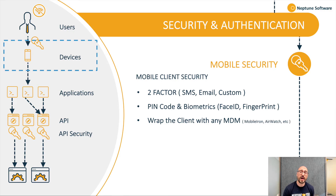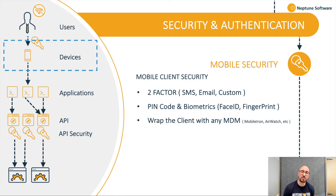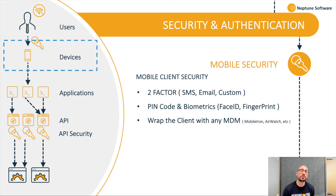Going one level down into the device — what kind of security features do we provide out of the box? We provide two-factor authentication with SMS and email. You can do X509 certificates. And you can empower this with a PIN code where you decide the length, as well as using Face ID or fingerprint ID — biometrics. You can also use NFC; for instance, in a warehouse environment where people are wearing gloves, you can use the employee card that you put to the back of the device so that you are automatically authenticated into the environment.